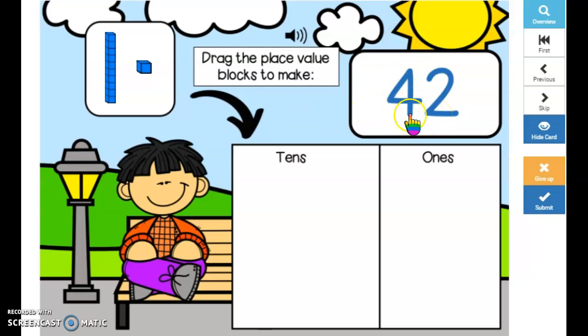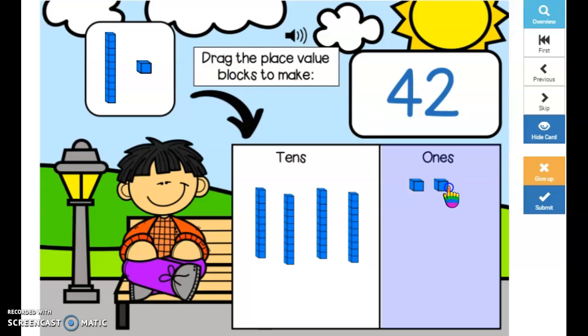So I would go and I would take 4 tens: 1, 2, 3, 4, and then 2 ones and I would build 42. Press submit.